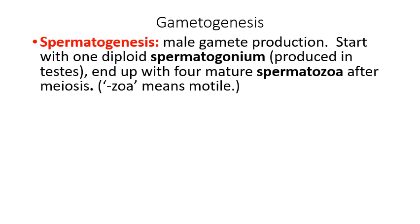This is generally called gametogenesis, but we call it spermatogenesis in males. The goal is to produce spermatozoa. We start with a diploid cell called a spermatogonium produced in the testes, and after meiosis we end up with four mature spermatozoa. The suffix 'zoa' means motile or mobile — spermatozoa have tails so they can swim. A zoologist studies animals because animals can move, and that's a helpful way to remember that 'zoa' means motile.